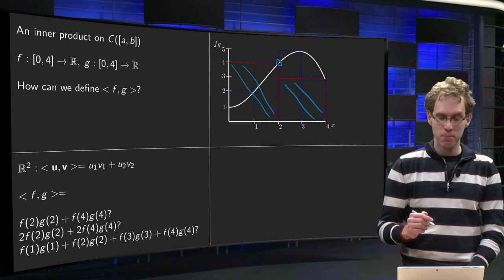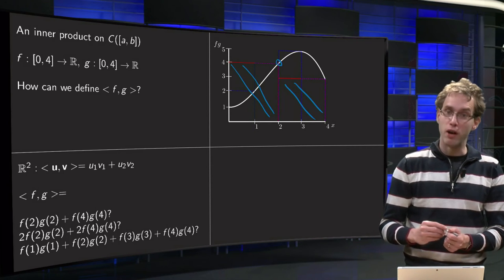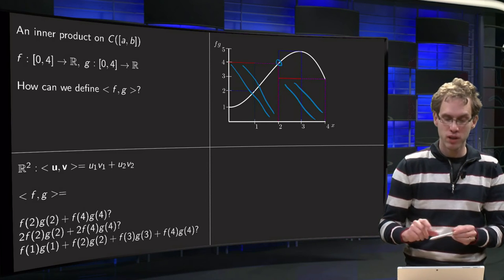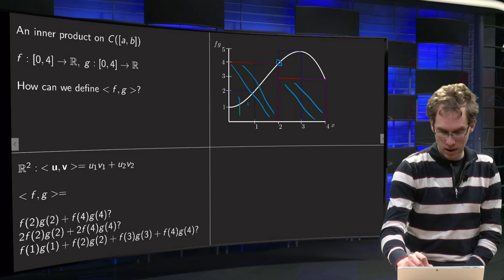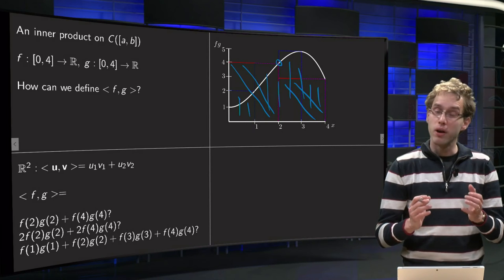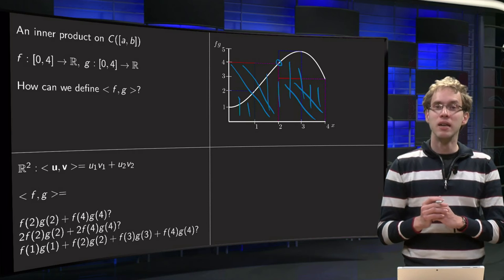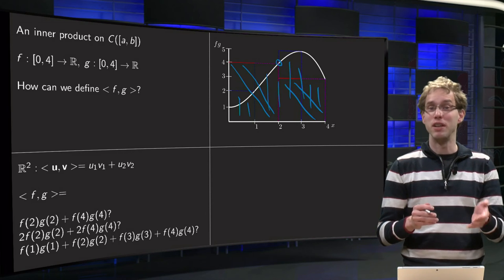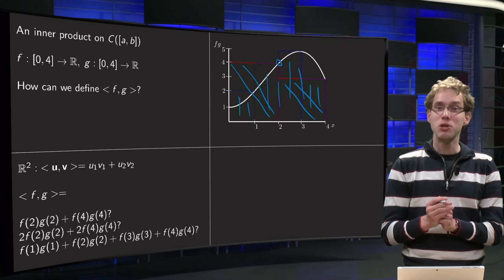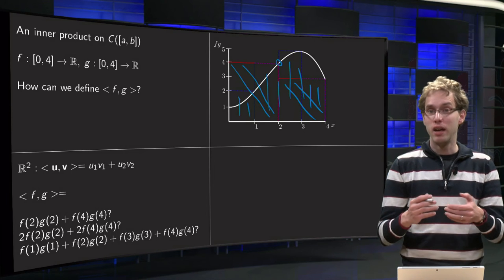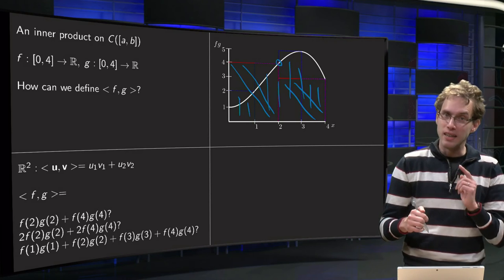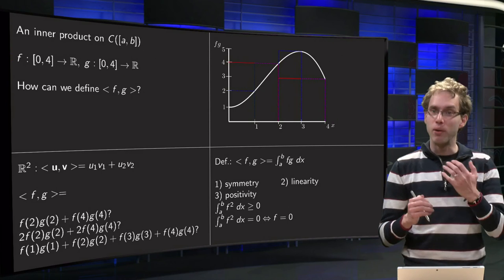And what did we do in this next step? Well, there, instead of taking the function values only at 2 points, we took them at 4 points, so there we took here the area basically under the blue curve, so the blue rectangles. And well, you already see of course what is going to happen if we would add more points, you get more rectangles, and you say hey, this looks like, if you continue like that, you of course just get the integral under the function fg, and that is exactly how we are going to define our inner product.